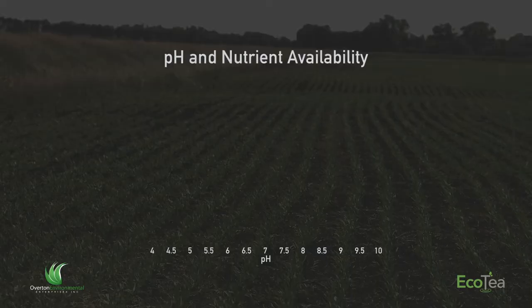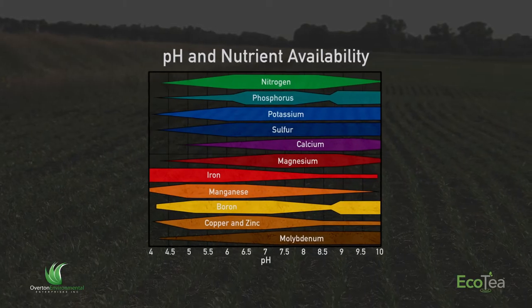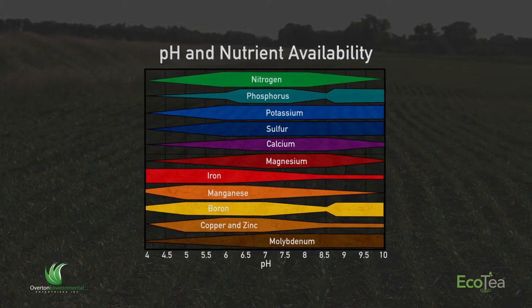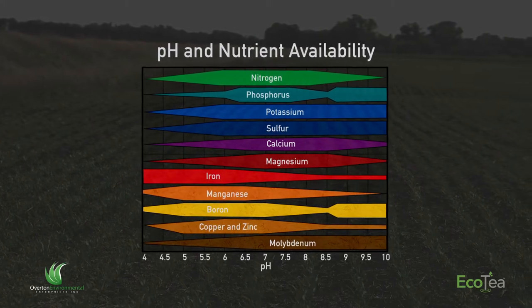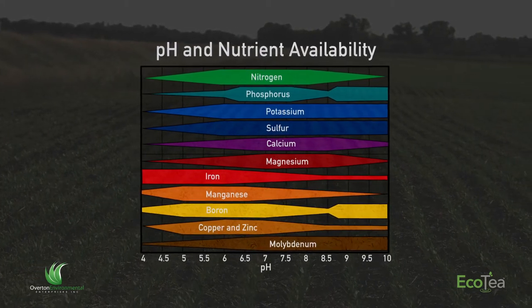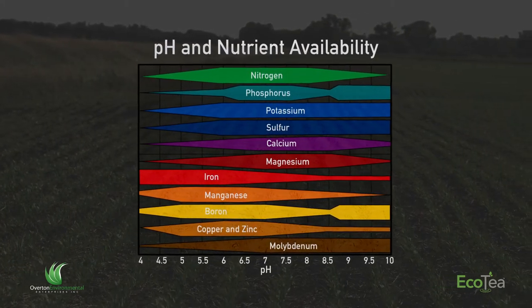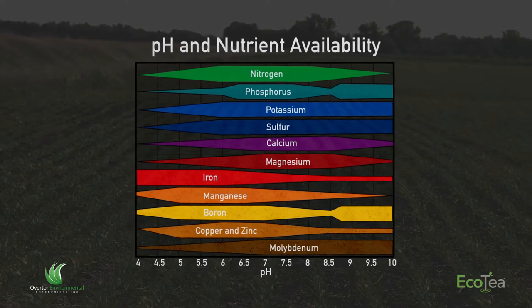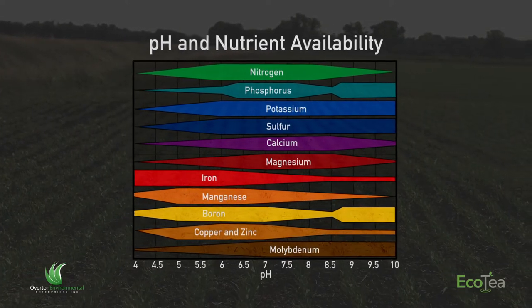Typically when you look at modern agricultural fertility programs, pH is the real driver. You look at the nutrient pool in the soil, determine what the pH is, and that gives you your availability of nutrients. It's all chemistry. It tells nothing about what the plant is doing or what the actual life in the soil is doing for the plant.